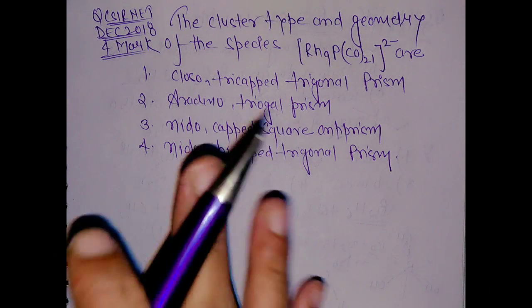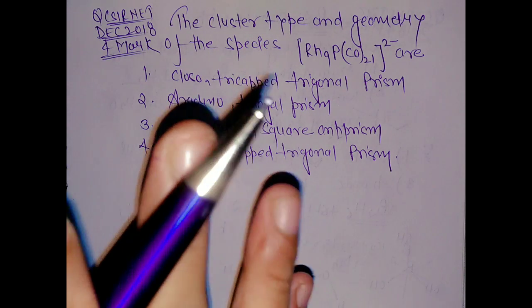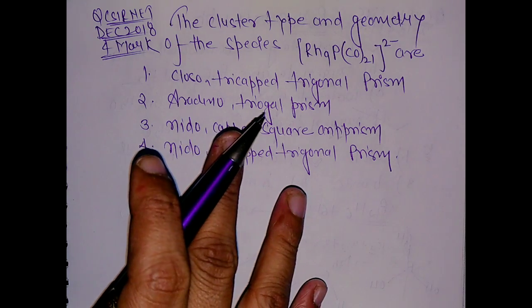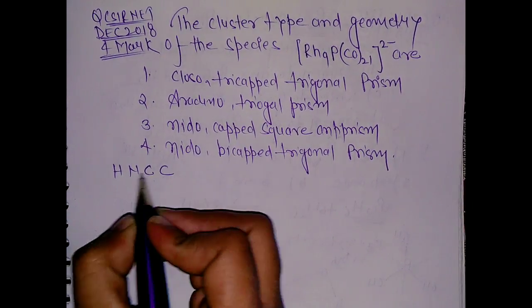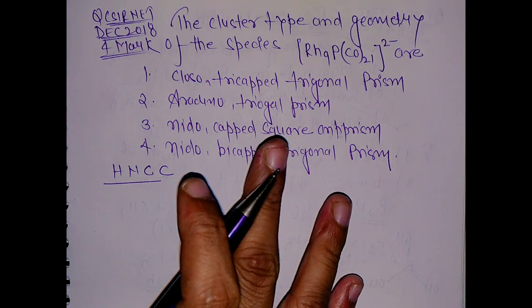Hello everyone, this question came for 4 marks in CSIR NET December 2018 examination from Chemical Sciences. This question is from organometallics, from the HNCC part, which is higher nuclearity carbonyl cluster.